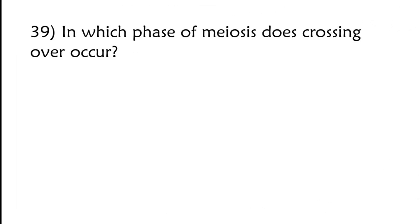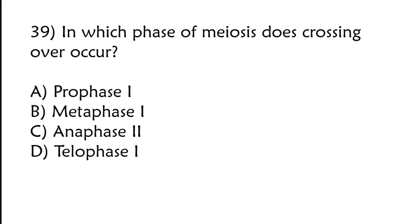In which phase of meiosis does crossing over occur? Prophase 1, metaphase 1, anaphase 2, telophase 1? Correct answer is option A, prophase 1.